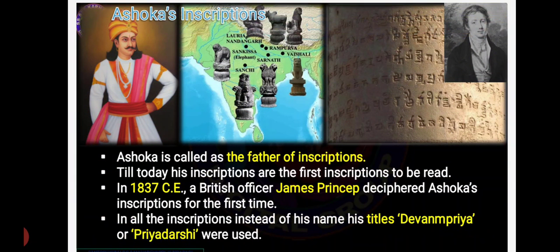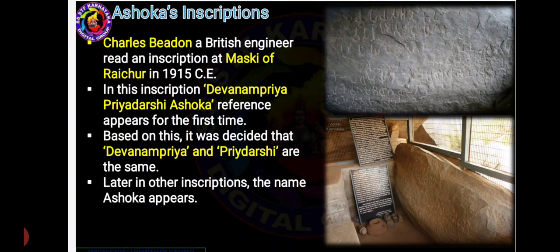Ashoka is called the father of inscriptions. In 1837 CE, a British officer James Prinsep found the meaning of Ashoka's inscriptions. Everywhere instead of his name, his titles Devanampriya or Priyadarshi were used. Devanampriya Priyadarshi Ashoka is referred to by Charles Bidhan, confirming both names refer to the same person.